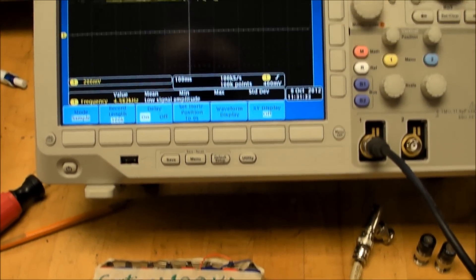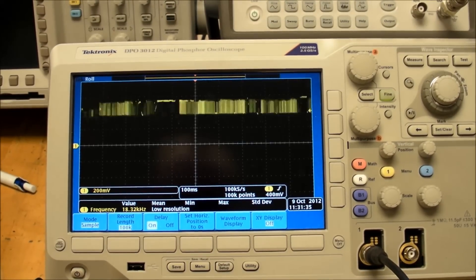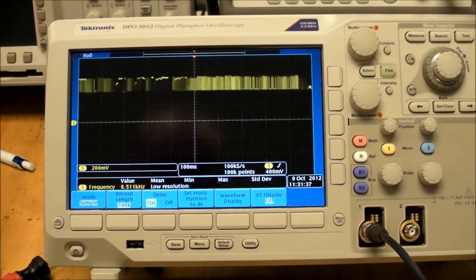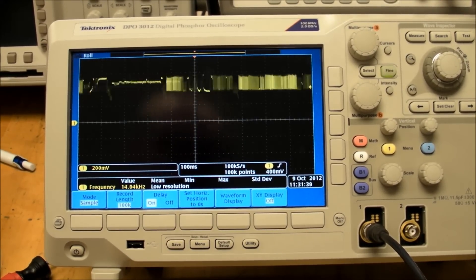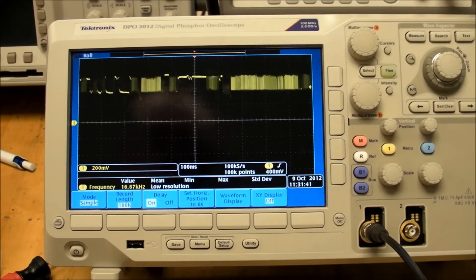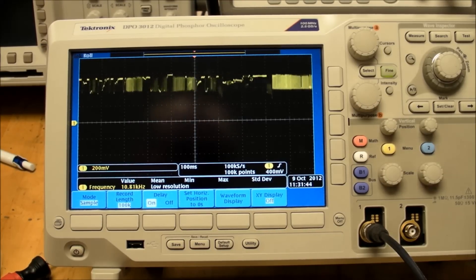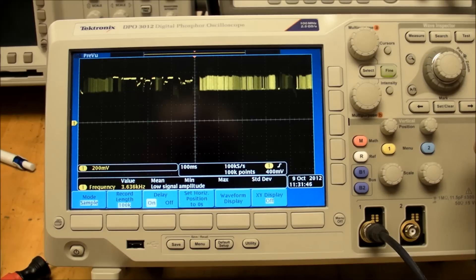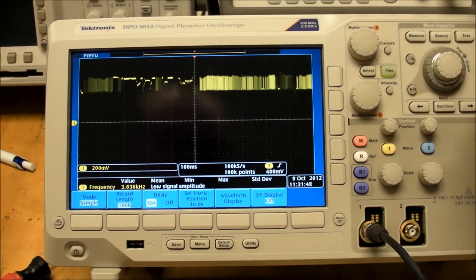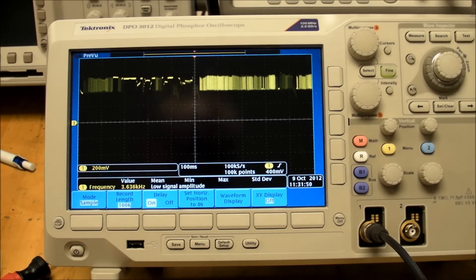And here it is, hooked up to a Tektronix digital scope, a DPO 3012. It has a 5 megapoint capacity, but I have it set for 100,000 data points going across, so let me pause it here and then zoom in and take a closer look at what's going on.